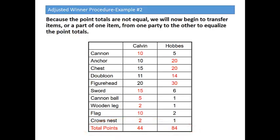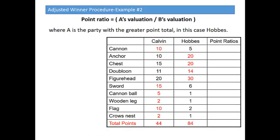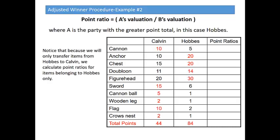To figure out which item we will transfer or share, we use what's called point ratios. The point ratio is a simple division of A's valuation divided by B's valuation, where A is the party with the greater point total — in this case, Hobbes. Notice that because we will only transfer items from our initial winner, Hobbes, to our initial loser, Calvin, we're only going to calculate point ratios for the items belonging to Hobbes. Only Hobbes will have to share.